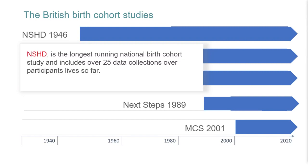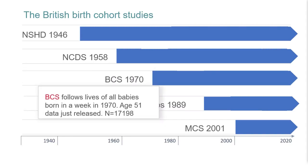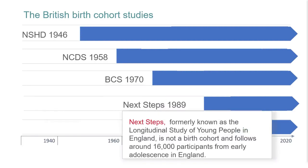The 1958 National Child Development Study, or the NCDS, is following the lives of an initial 17,415 people born in England, Scotland and Wales in a single week of 1958. With 11 follow-ups, the study has collected information on their physical and educational development, economic circumstances, employment, family life, health behaviour, wellbeing, social participation and attitudes. Similarly, the 1970 British Cohort Study is following the lives of around 17,000 people born in England, Scotland and Wales in a single week of 1970.